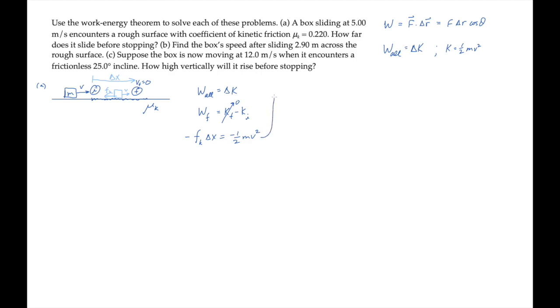The kinetic friction force on the box is mu times the normal force, which in this case equals mg. So we can substitute that, cancel the masses, and solve for the distance that the box slides before stopping.